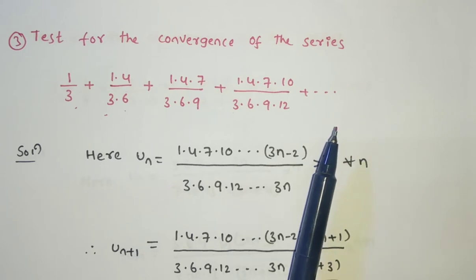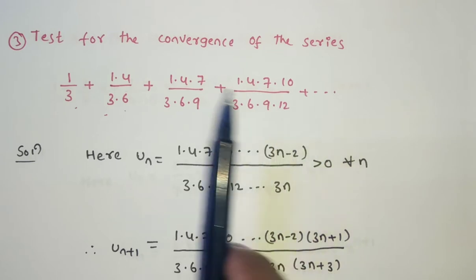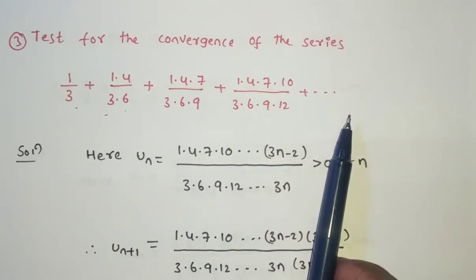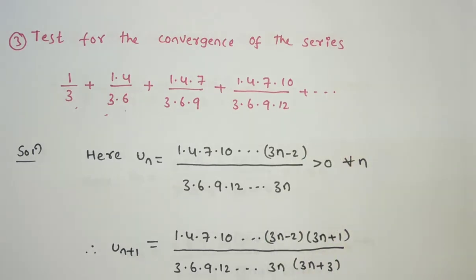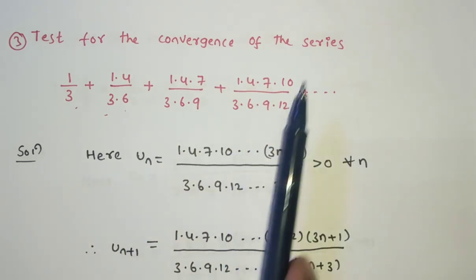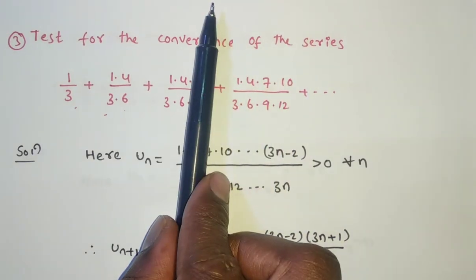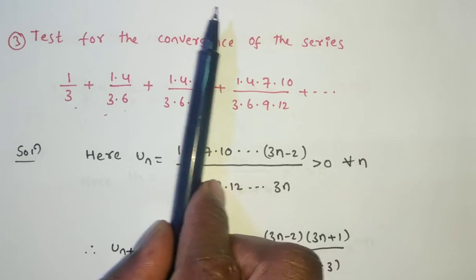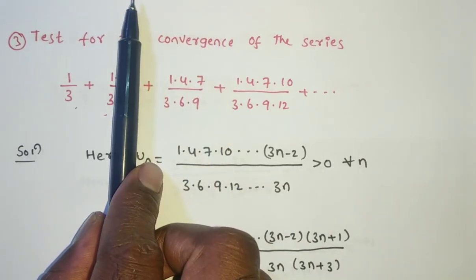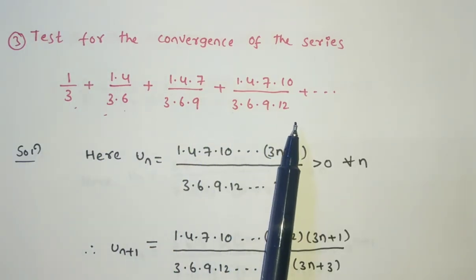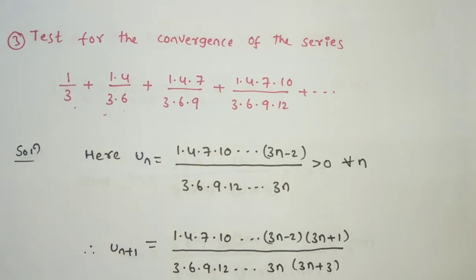So we need to find out the nth term. To test the convergence, we require U_n only. Since the nth term is not directly given, we need to find it. To find the nth term, observe that if you remove the last term from the fourth term, it becomes the third term, and so on. So to write the nth term, we also need to write the previous n−1 terms. This is called the repeated series form.